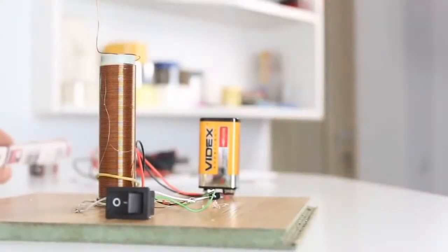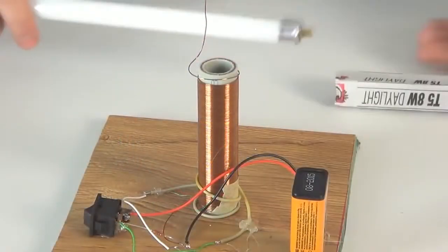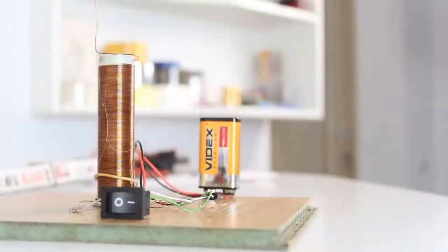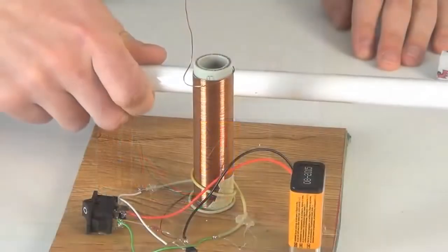That's all guys, mini Tesla coil is ready. Now we take a fluorescent lamp and test it. Turn on the switch and bring the lamp closer to the coil.